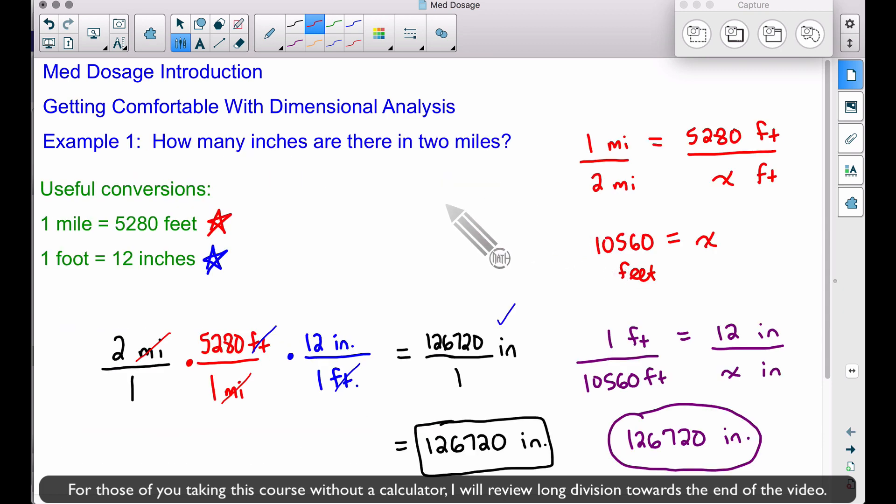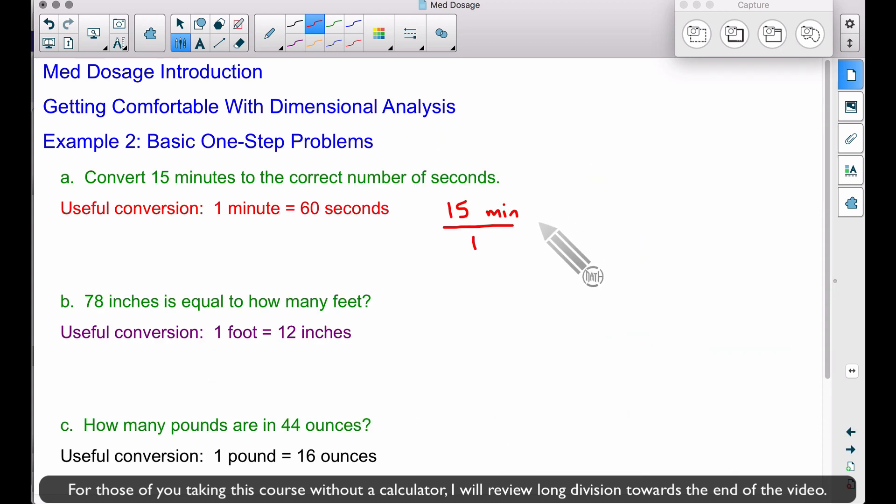Our goal is to multiply fractions and get rid of words. We'll multiply this fraction using our useful conversion: 1 minute equals 60 seconds. We put 1 minute at the bottom and 60 seconds at the top. This allows us to cancel out minutes, leaving only seconds as our unit, which is exactly what we want.